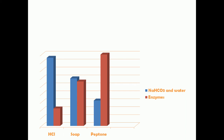A diagram shows pancreatic secretion responses to three different stimuli. When HCl is given — representing increased acid — there is more production of sodium bicarbonate and water (shown in blue) compared to enzymes (shown in red). This makes sense because the pancreas receives signals that more base is needed to neutralize the acid. When soap (fat) is given, there is no significant variation in the secretion of sodium bicarbonate, water, or enzymes.